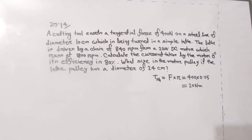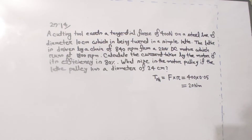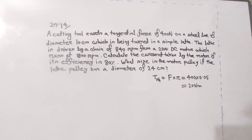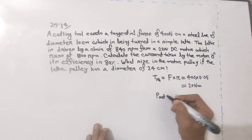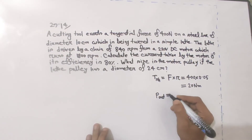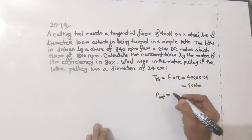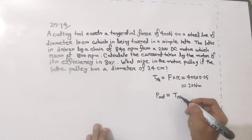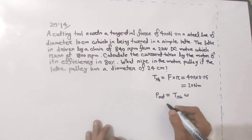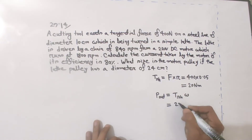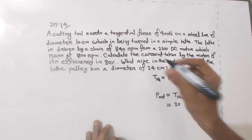Now to find the output power, we need both torque and omega. The output power formula is: output power equals torque multiplied by omega. We have torque T equals 20 newton meter, and now we need omega from the rpm.